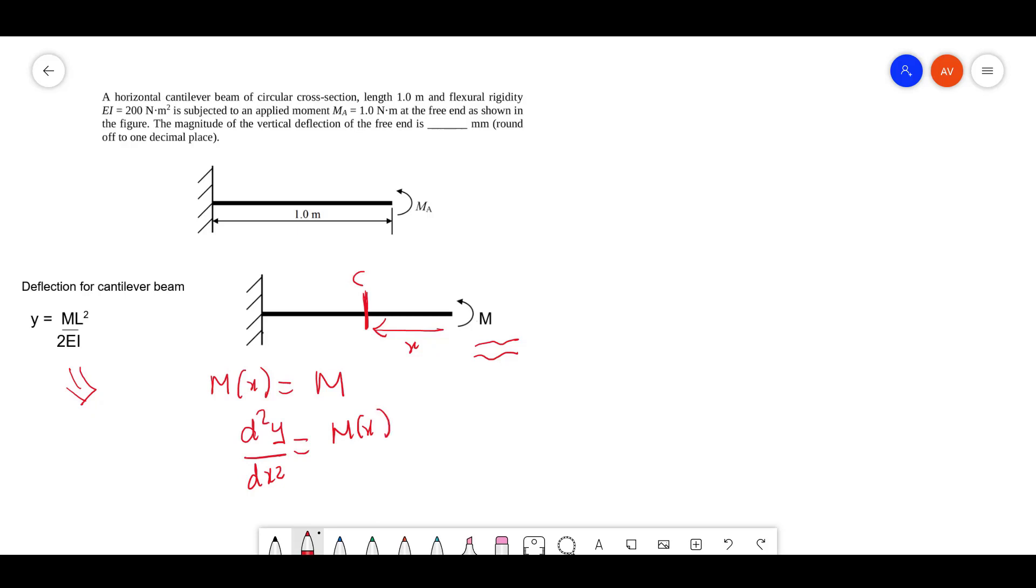M(x) by EI, which is constant EI. Now what you have to do is integrate both sides. Upon integration, what do you get is dy/dx, which is y dash, equals M times x by EI plus the constant of integration.